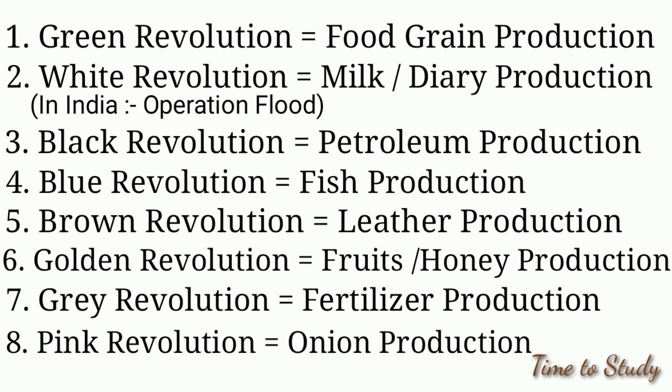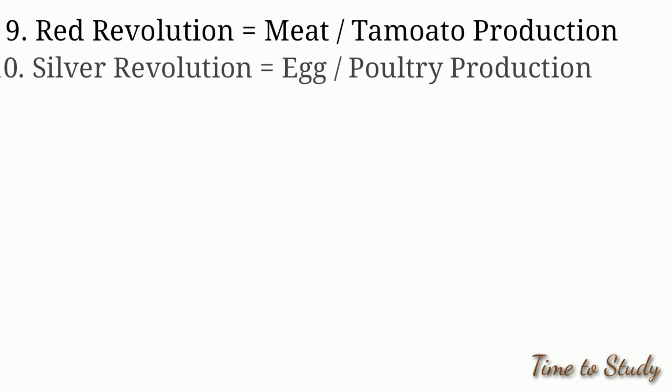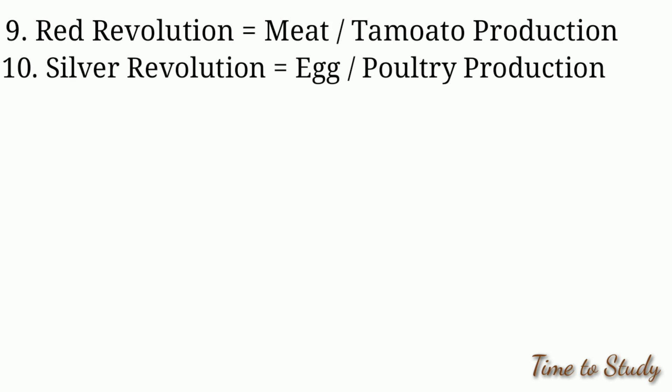Pink revolution is related to onion production. Red revolution is related to meat and tomato production. Silver revolution is related to egg or poultry production.